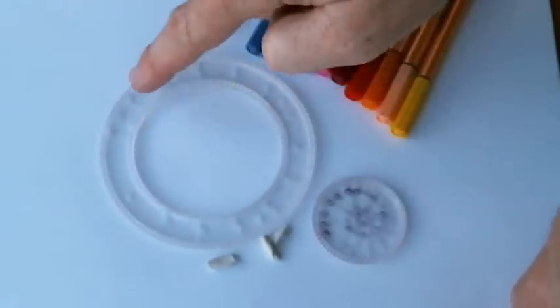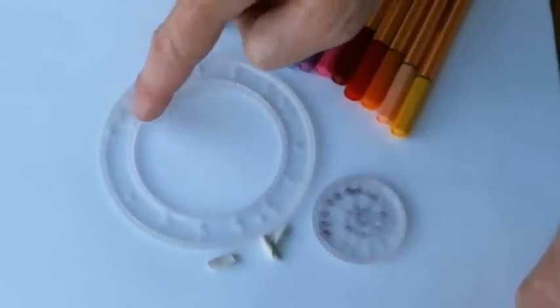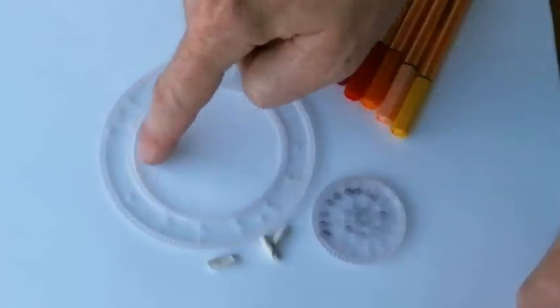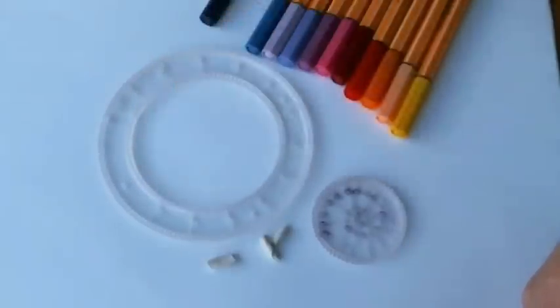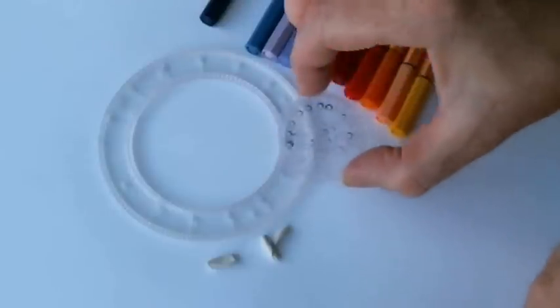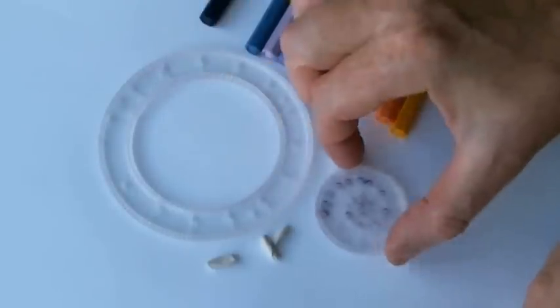We're going to use the ring number 150 over 105. The 105 means there's 105 teeth on the inside, and that's what counts for us. And we're going to use wheel number 63.